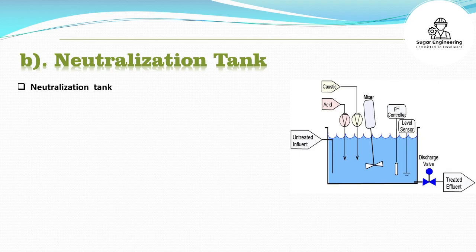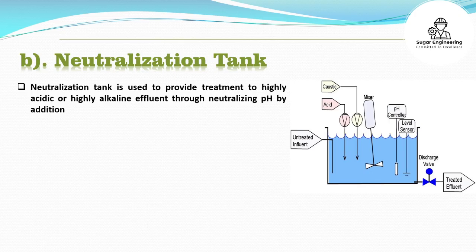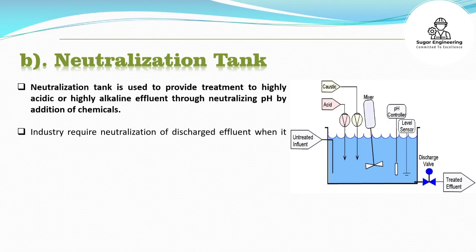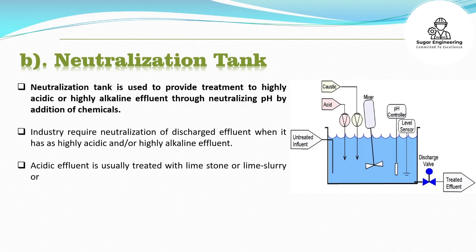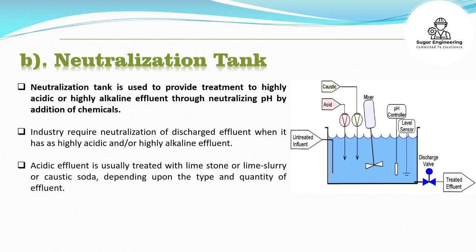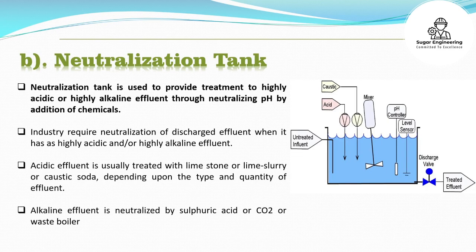Neutralization Tank is used to provide treatment to highly acidic or highly alkaline effluent through neutralizing pH by addition of chemicals. Industries require neutralization of discharged effluent when it has highly acidic and/or highly alkaline characteristics. Acidic effluent is usually treated with limestone, lime slurry, or caustic soda, depending upon the type and quantity of effluent. Alkaline effluent is neutralized by sulfuric acid, CO2, or waste boiler flue gas.